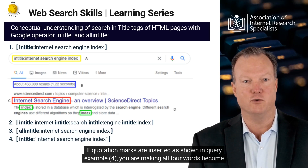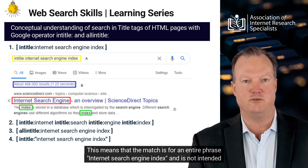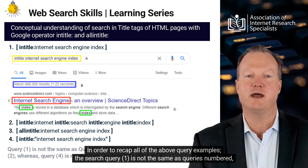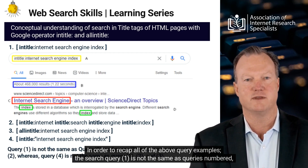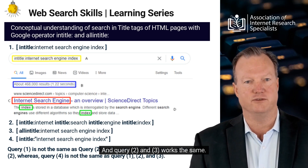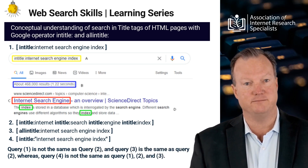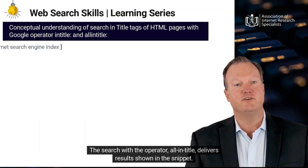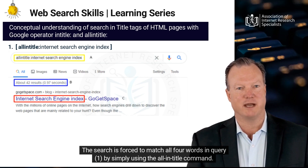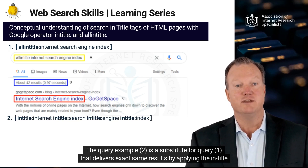If quotation marks are inserted as shown in query example 4, you are making all four words become a search phrase. This means that the match is for an entire phrase 'internet search engine index' and is not intended to find separate words scattered across indexed pages. To recap all of the above query examples: search query 1 is not the same as queries 2, 3, and 4. Query 2 and 3 work the same, whereas query 4 is not the same as queries 1, 2, and 3. The search with the operator allintitle delivers results shown in the snippet, and is forced to match all four words in query 1 by simply using the allintitle command.